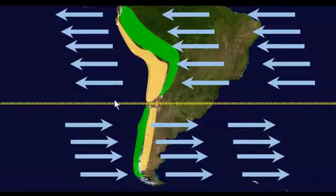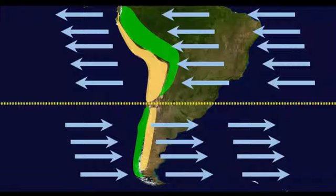South of that yellow dashed line, we have a different pattern. The pattern is where winds go from west to east, and thus we have a wet side of the mountain on the western side and a rain shadow on the eastern side of the Andes Mountains. This all relates to the predominant wind patterns — something not covered extensively this semester — but it helps us understand why we have rain shadows on different sides of the Andes Mountains contingent on where in latitude we're located.